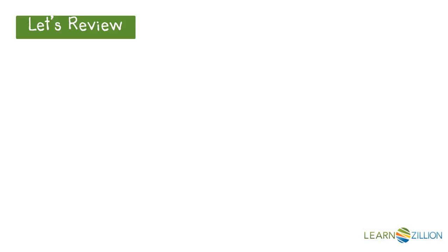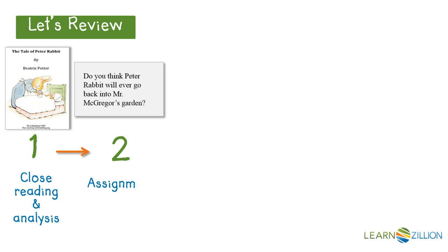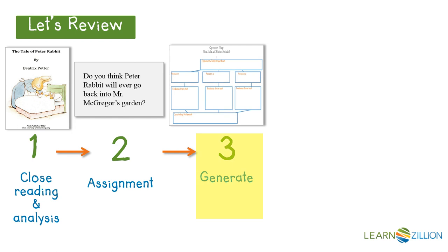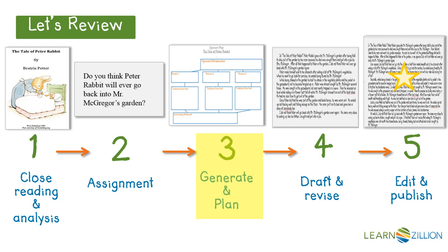Let's review the writing process. We have already completed steps one and two by rereading our text and thinking about the prompt. We have also introduced our text, determined our opinion, and developed three reasons for it. For this lesson, we will continue to generate and plan our writing by looking for details in our text that support our reasons. Then, once our plan is complete, we will move on to drafting and revising, and last, editing and publishing.